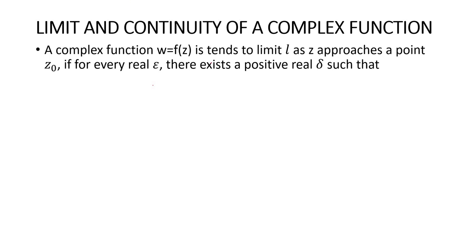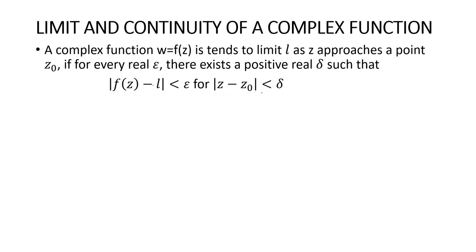A complex function w = f(z) tends to a limit l as z approaches a point z0. For every real epsilon, there is a positive real delta such that the modulus of f(z) minus l is less than epsilon, for modulus of z minus z0 less than delta. This is a simple definition of the limit of a complex function.